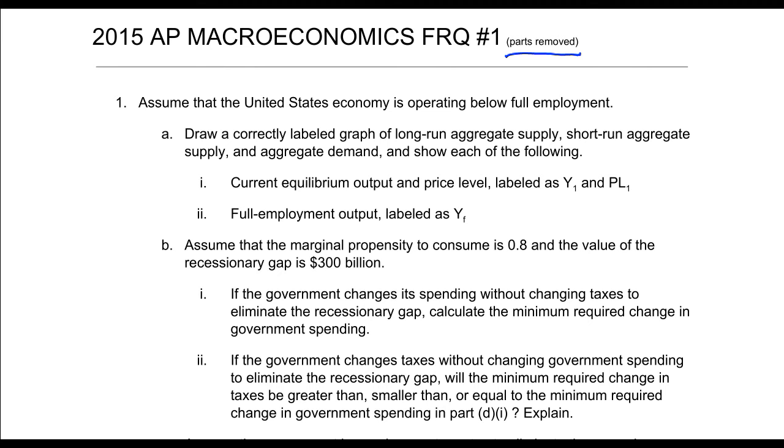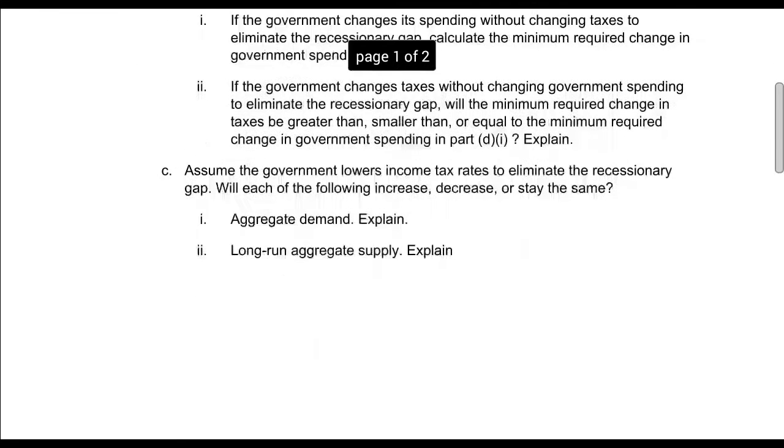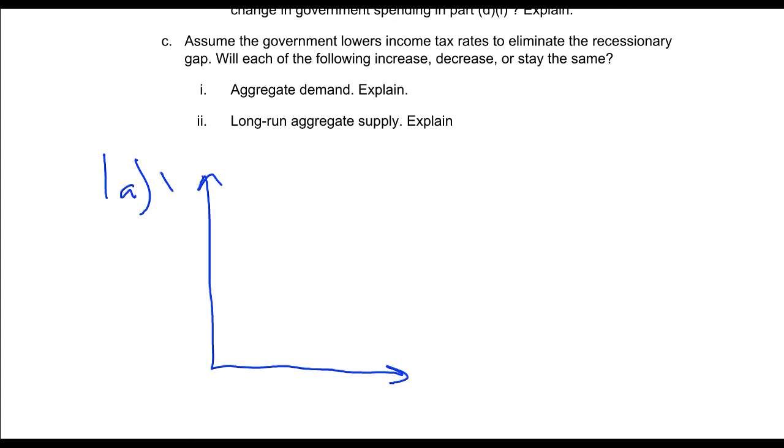Assume the United States economy is operating below full employment. Draw a correctly labeled graph of long-run aggregate supply, short-run aggregate supply, and aggregate demand. Let's do part 1A. I've got to draw a graph. Always make sure we label everything. So, price level and GDP or real GDP or national income. We've got to draw in our aggregate demand curve, short-run aggregate supply, and I might even draw in my little equilibrium amounts there.